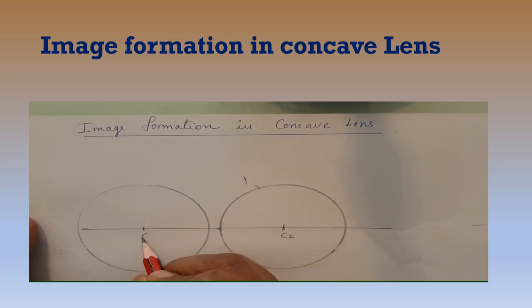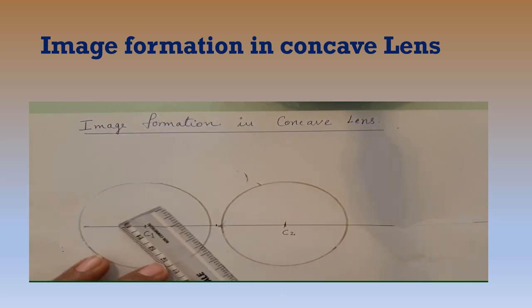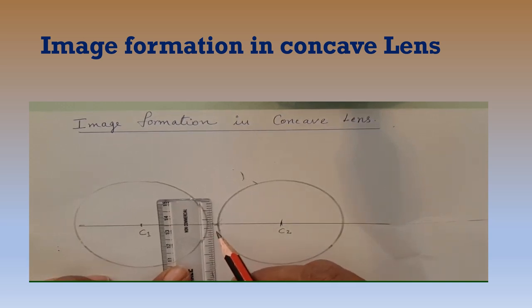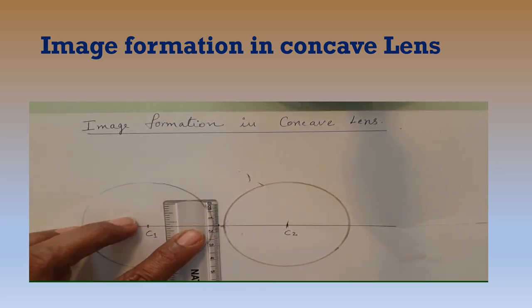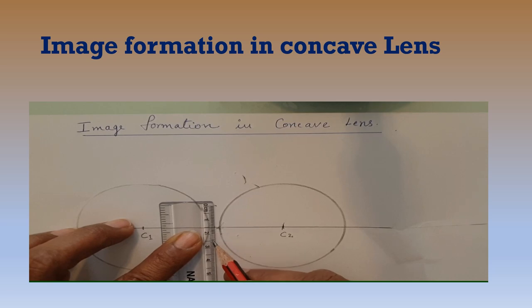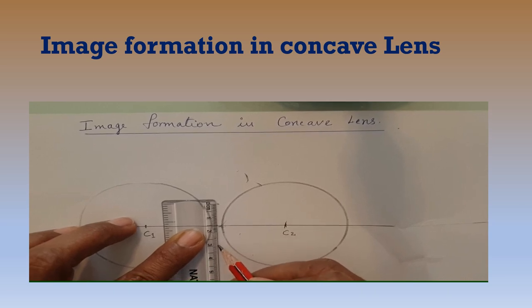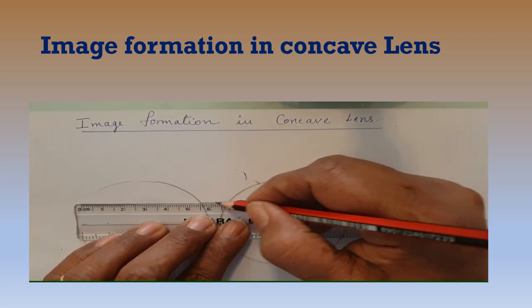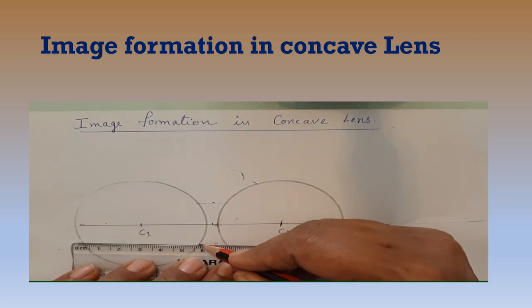This is C2 and this is C1. The middle point is the optical center of our lens. To the top and bottom of the principal axis, we take 2 centimeters or 1.5 centimeters each, and mark those as the edges of the lens. You can take any height for the lens — that does not affect the image formation.